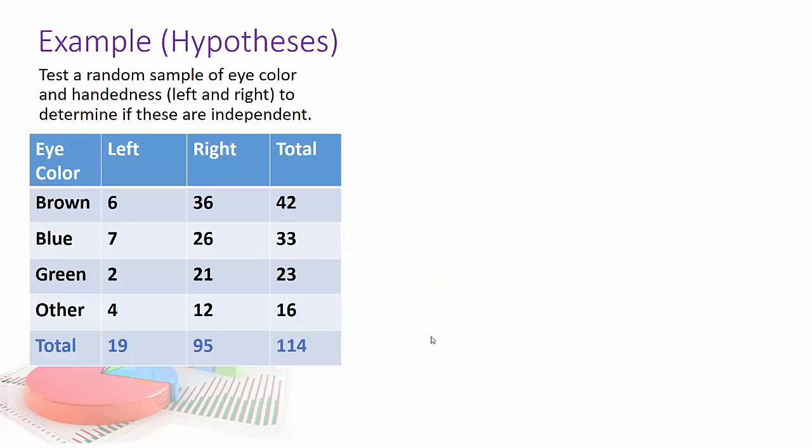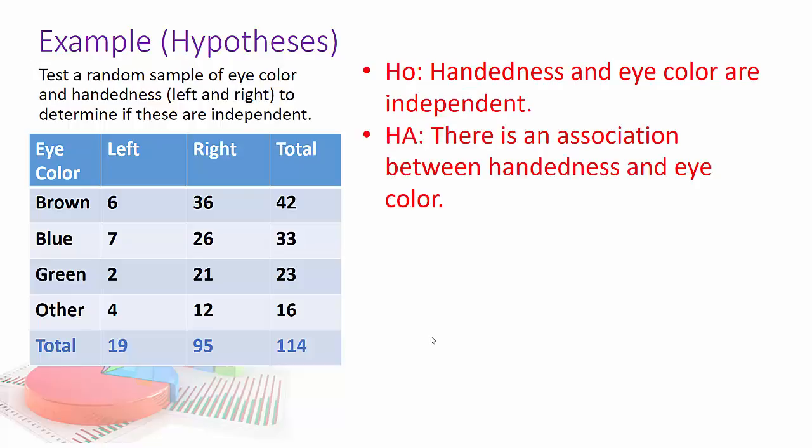We're going to test a random sample of eye color and handedness, left and right, to determine if these are independent. So I've got my table here for my sample, and our null is that handedness and eye color are independent. The alternate is that there's some sort of association between handedness and eye color. So I'm going to run a chi-square test for independence.